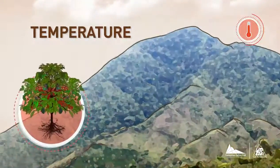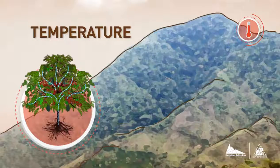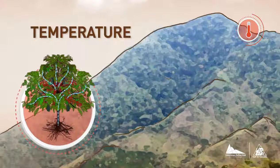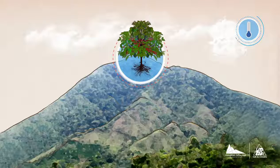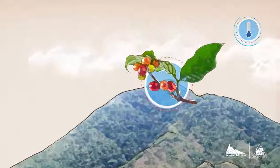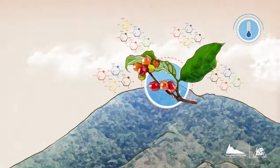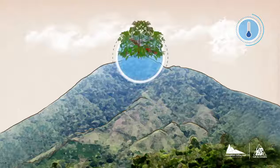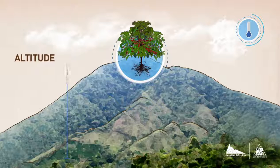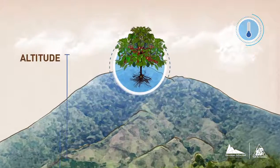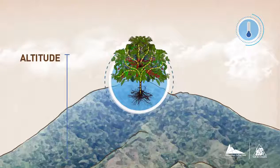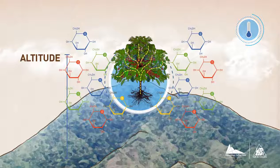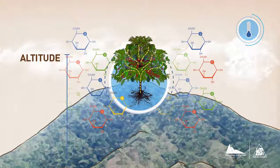At higher temperatures, the plant must work harder and therefore it has to consume its sugar reserves. This means that at lower temperatures, there are better chances of sugar accumulation in the cherry. This factor is associated with altitude, since at higher elevations there are lower temperatures at which the plant slows down its production process and gets to accumulate more sugar quantity.